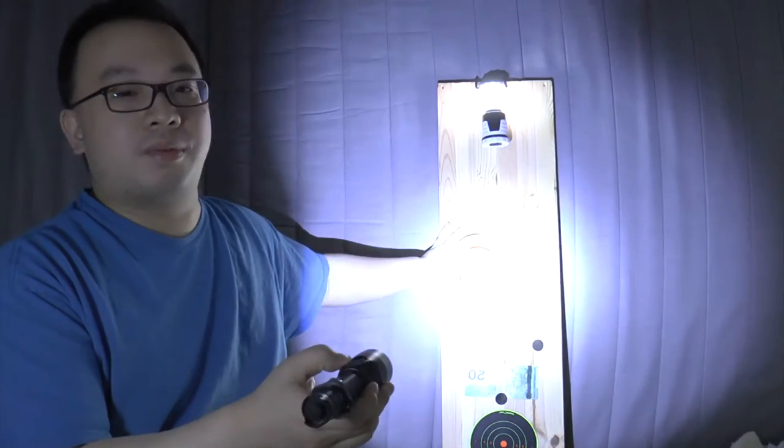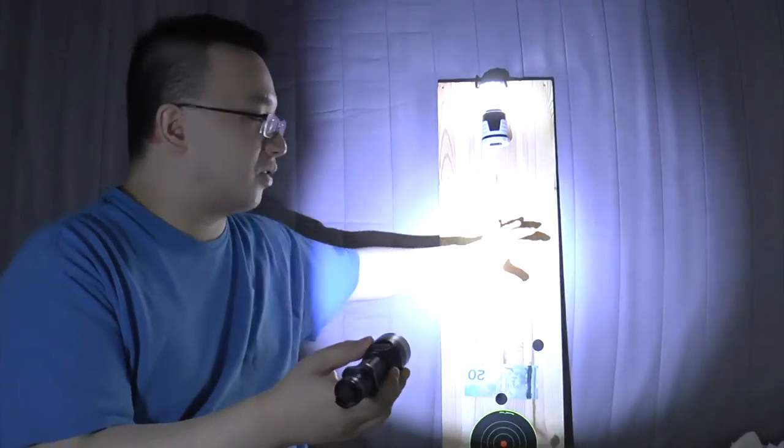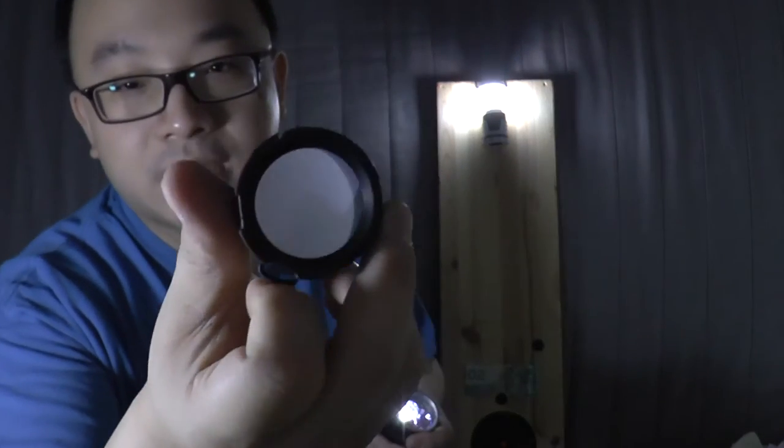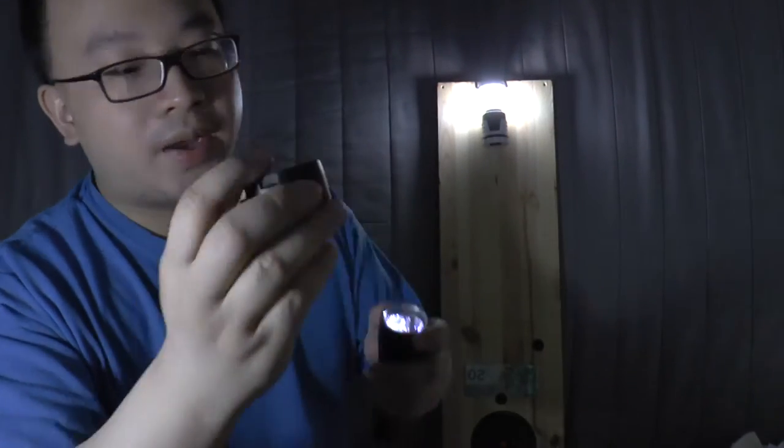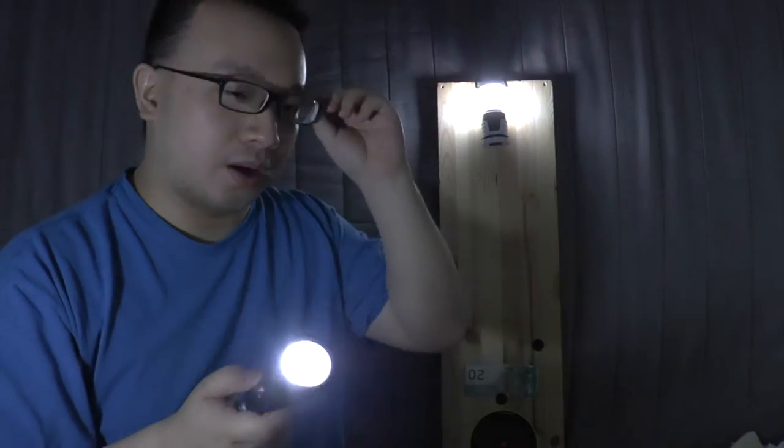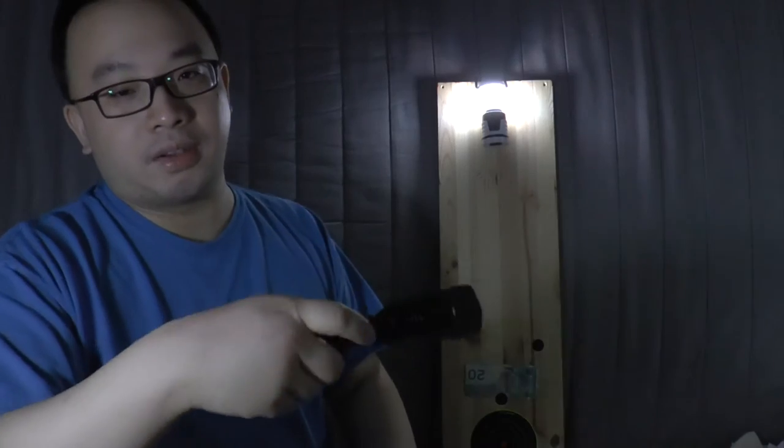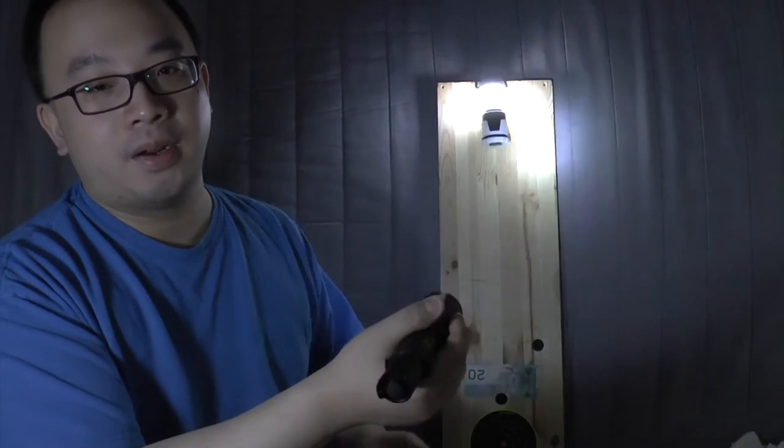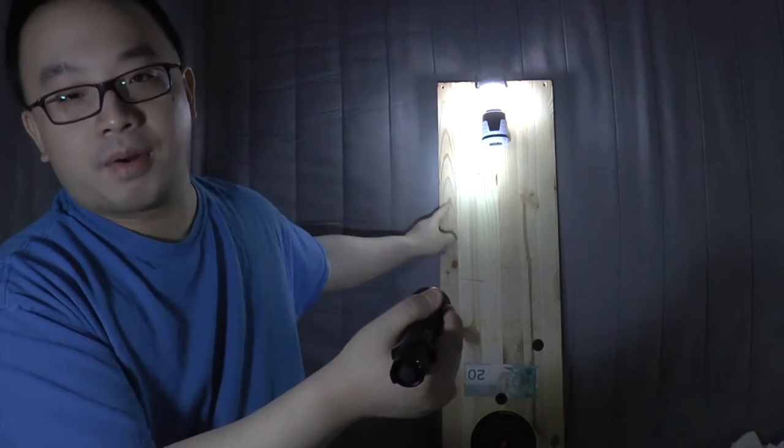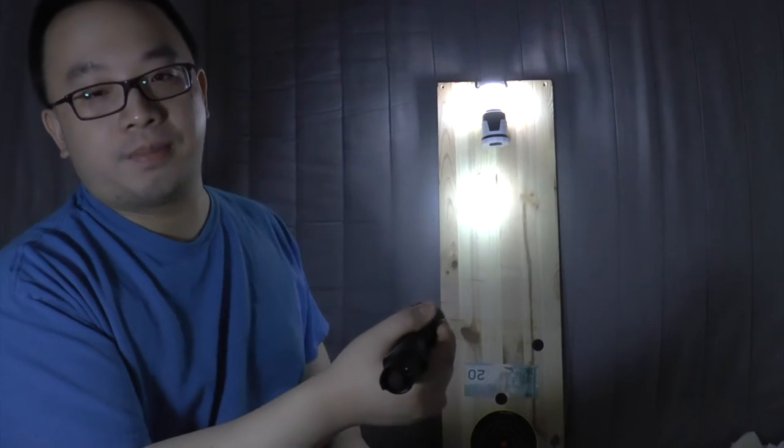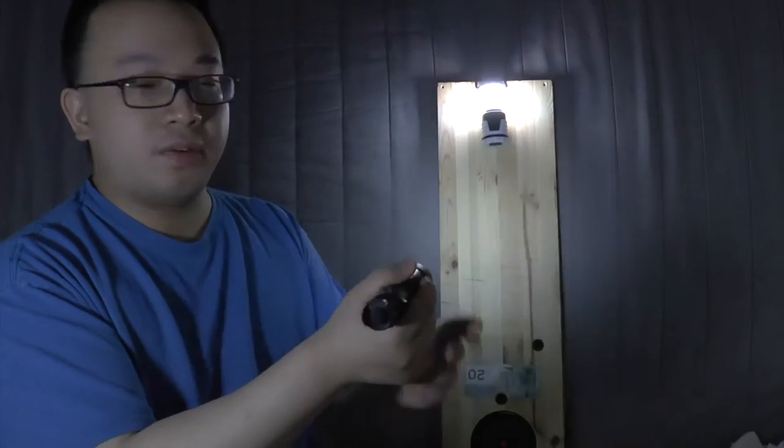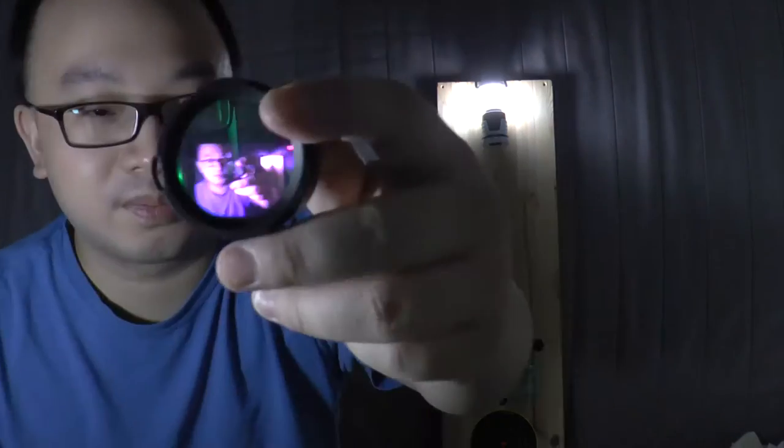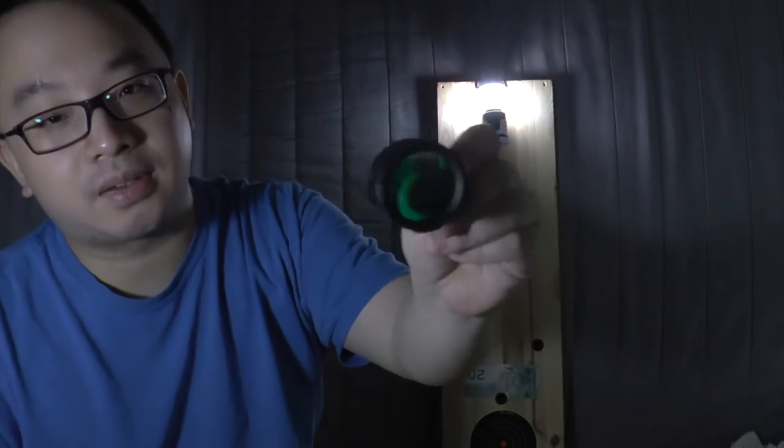This is the diffuser. You can buy these from flashlight shops or stores online. What it does is diffuse the light. Now you can see the light is very soft. When I take it off, you see the hot spot, which is this very white concentrated beam in the center. With the diffuser, the hot spot is gone.